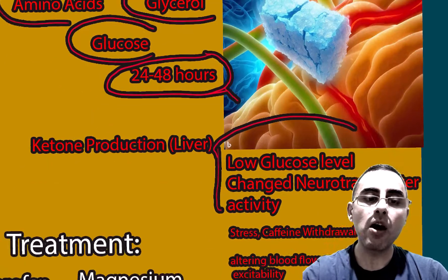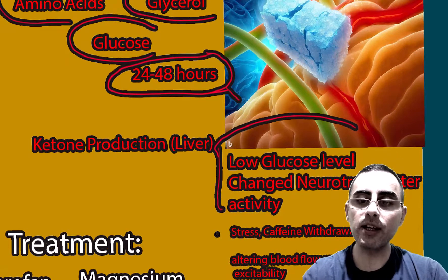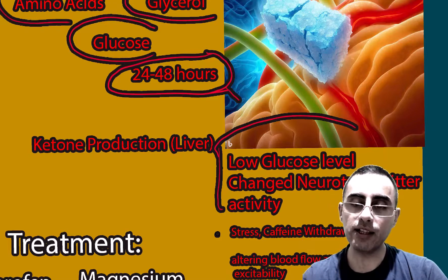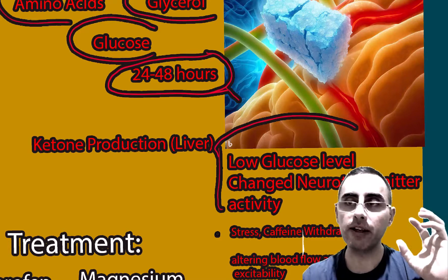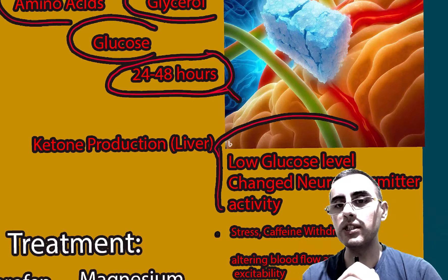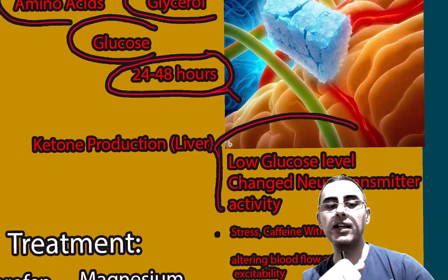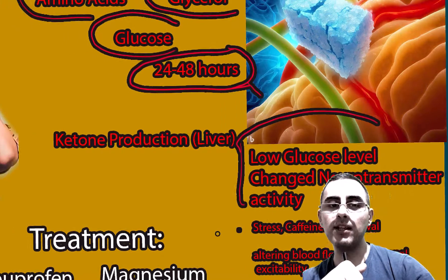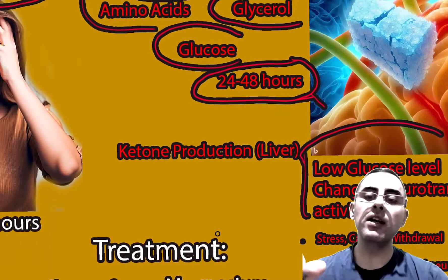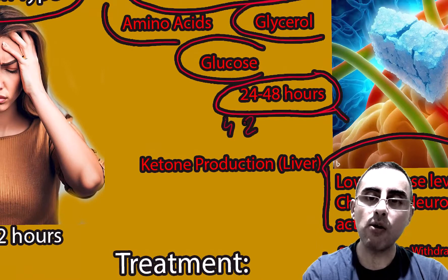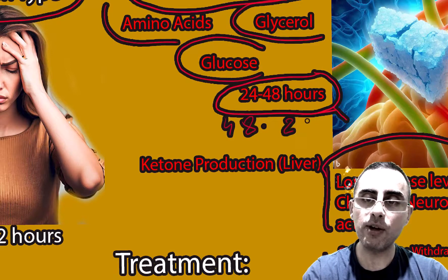Low glucose levels also cause changes in neurotransmitter activity, which further exacerbates pain. Other causes include stress, caffeine withdrawal, and dehydration — which is common during fasting — and these alter blood flow and change neural excitability.